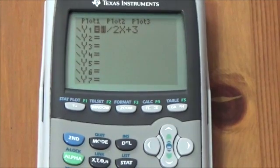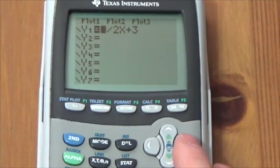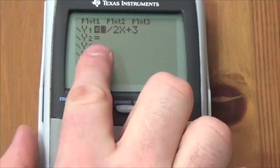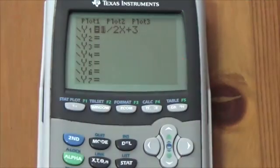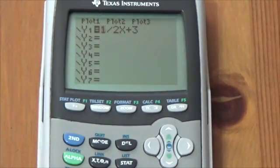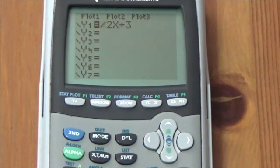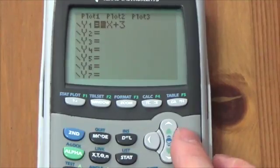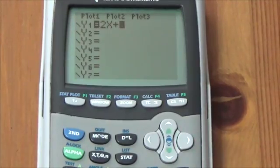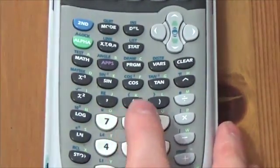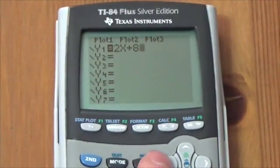But I want to show you something else you can do here. I can simply put the cursor over this right here. I want to graph 2x plus 8. So I'm going to put the cursor right there. I'm just going to press the delete button and then the delete button again. So now I've got it at 2x. I can come over to 3 and I can simply type 8 over top of it. I don't have to delete it.